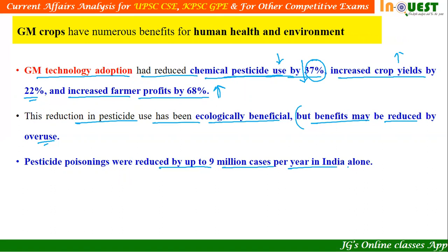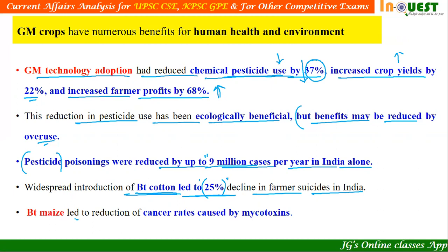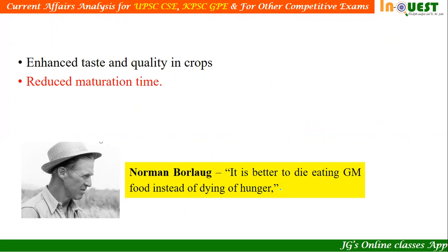Pesticide poisoning was reduced by up to 9 million cases per year in India alone. Widespread introduction of Bt cotton led to a 25% decline in farmer suicides in India — significant because farmer suicides are a major issue. Bt maize led to a reduction of cancer rates caused by mycotoxins. GM crops also offer advantages such as enhanced taste and quality, reduced maturation time, and the ability to involve new products and growing techniques.